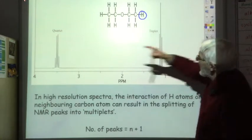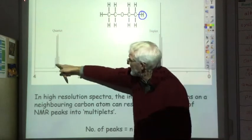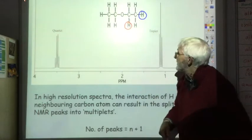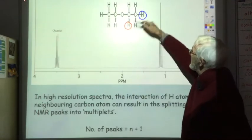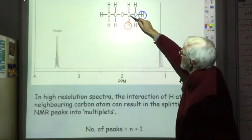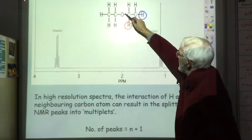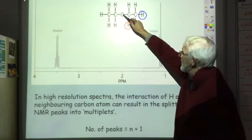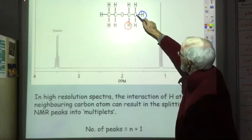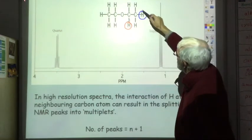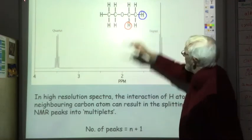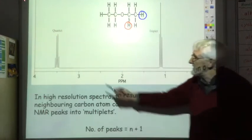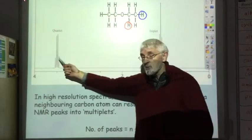Now if you look at the other hydrogen environment, we look at its neighbouring carbon atom. To the left we've got an oxygen, so that's not a carbon atom. To the right we've got a carbon and it's got one, two, three hydrogens attached to it. So we get three plus one peaks — it gets split into a quartet.